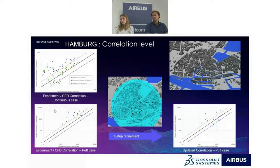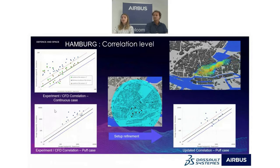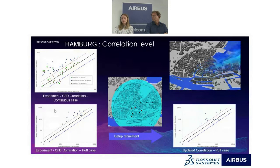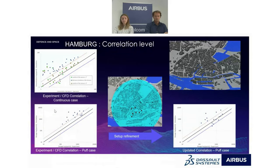Here are the results. On the left you can see the first simulation compared against the experimentation. The points were initially somewhat far from the black line, which represents perfect correlation between CFD and experimental data. To fix this, we refined the case setup. The aim was to have between 30 and 50 percent of the points within the tolerance interval. On the right you can see the final result was much better — more than 50 percent of the points fell within that ±30% tolerance interval.